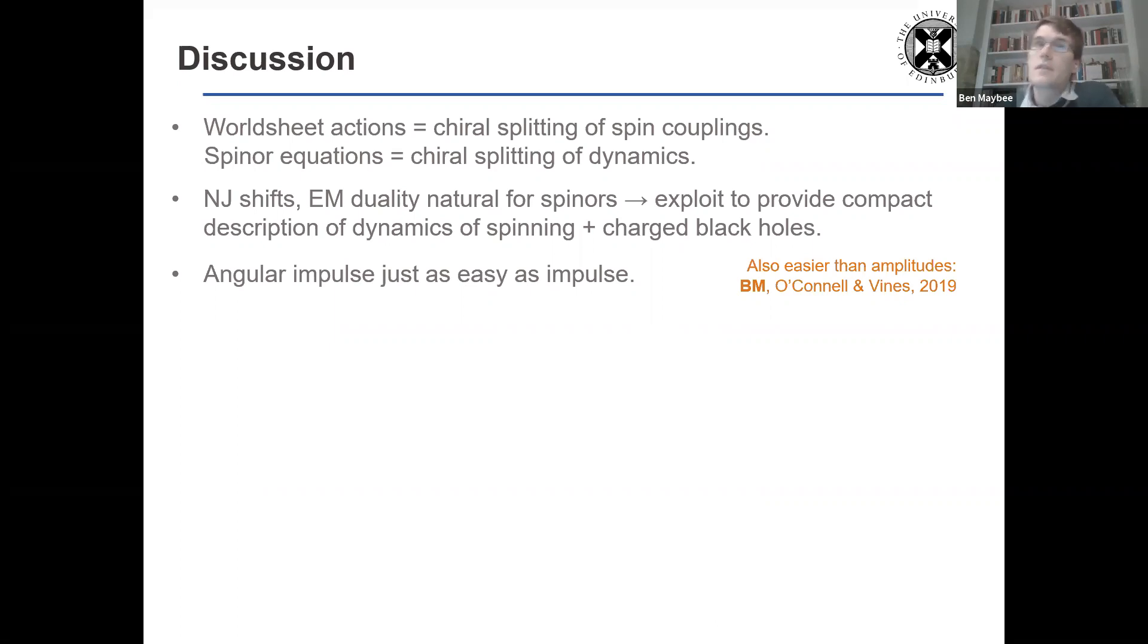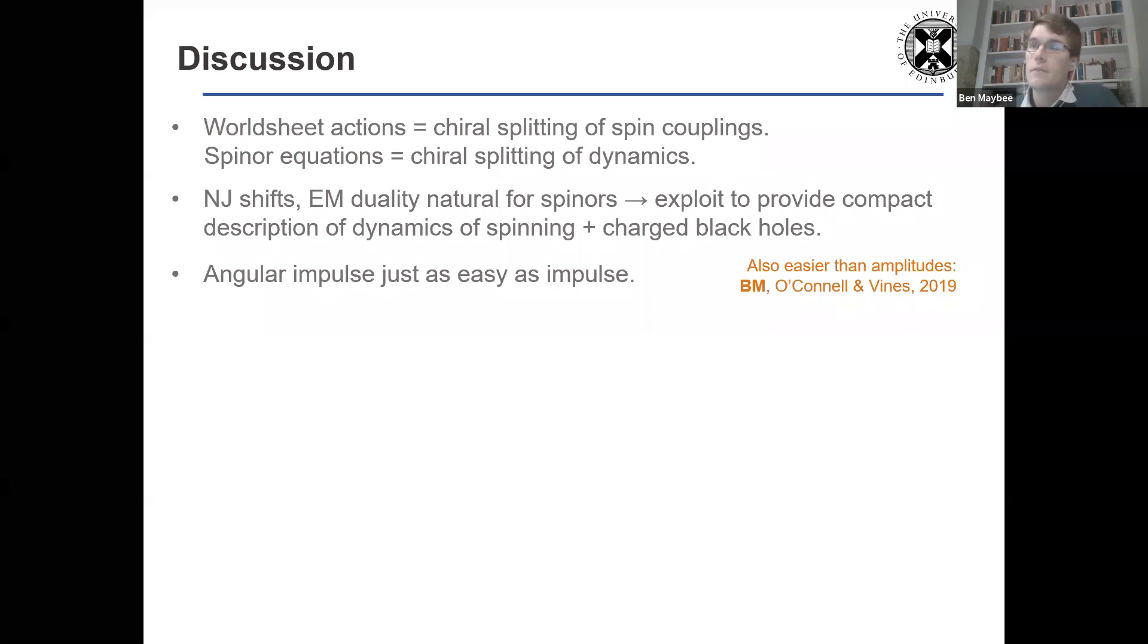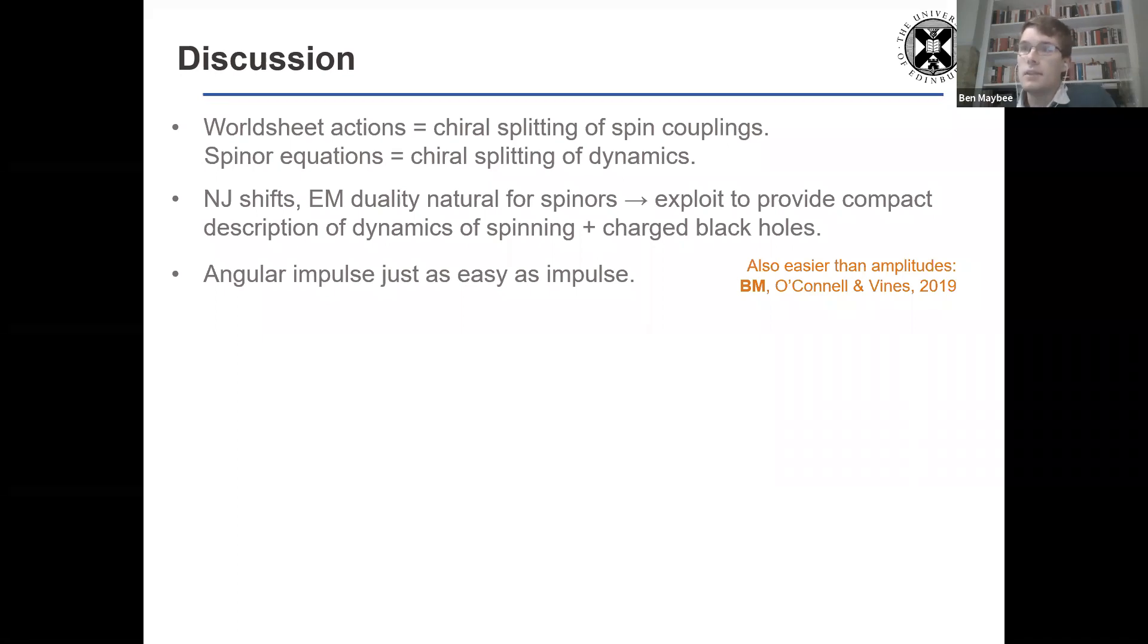The Newman-Janis shifts of electromagnetic duality, they're all really natural in this formalism. So it's very easy to exploit them and do very compact, simple calculations that give you results that you can calculate using classical methods or amplitudes. And as I've emphasized, the angular impulse change in the spin vector is just as easy as calculating the change in the momentum.